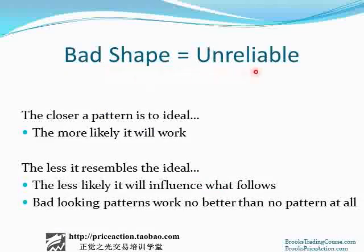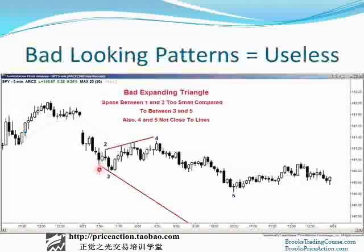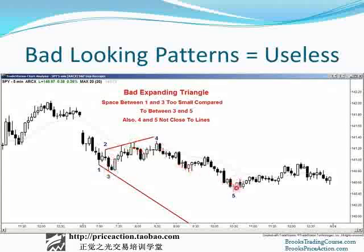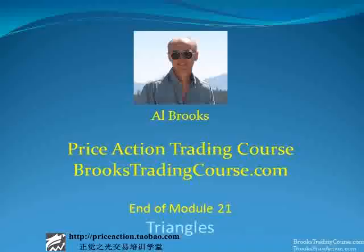The worse the shape, the less reliable the pattern. The closer the pattern is to an ideal shape, the more likely it will work. The less it resembles the ideal, the less likely it will influence what follows. Bad looking patterns work no better than no pattern at all. So you can call this an expanding triangle with five pushes down, up, down, up, down. But the distance between five and three is great compared to the distance between one and three, and that usually means that whatever was taking place here has very little influence on what's taking place here. So I would not look at this as an expanding triangle bottom. Bad looking patterns are useless — if we reverse up here, it's not because of this expanding triangle. And that is the end of the module on triangles.